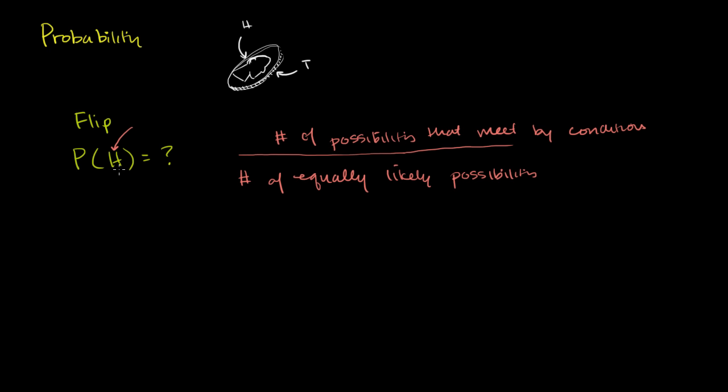So in the case of the probability of figuring out heads, what is the number of equally likely possibilities? Well, there's only two possibilities. We're assuming that the coin can't land on its corner and just stand straight up. We're assuming that it lands flat. So there's two equally likely possibilities. You could either get heads or you could get tails. And what's the number of possibilities that meet my conditions? Well, there's only one, the condition of heads. So it'll be 1 over 2. So one way to think about it is the probability of getting heads is equal to 1 over 2, is equal to 1 half. If I wanted to write that as a percentage, we know that 1 half is the same thing as 50%.